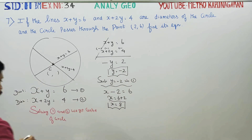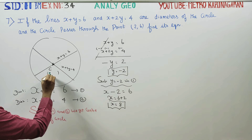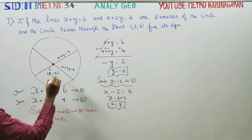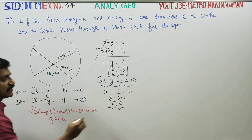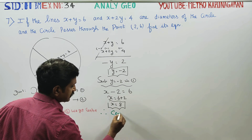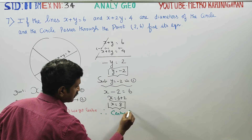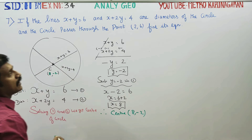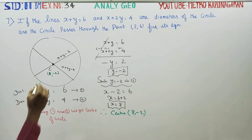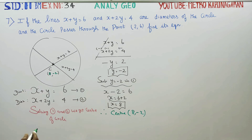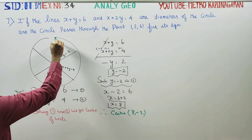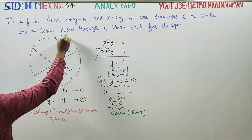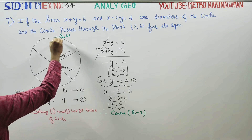The center is ready. The center of the circle is (8, minus 2). The circle passes through the point (2, 6).